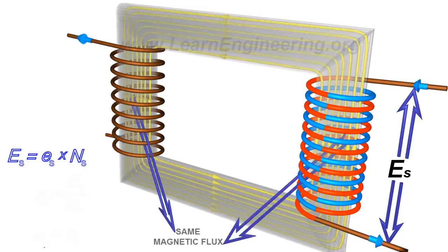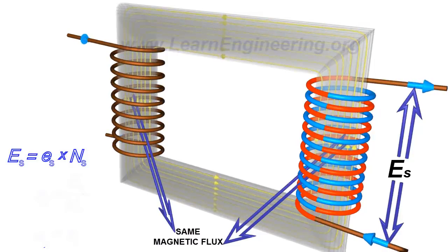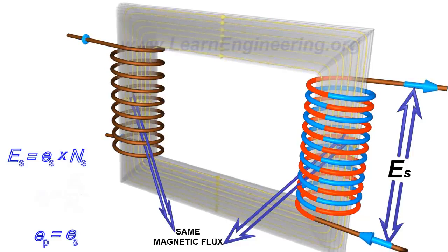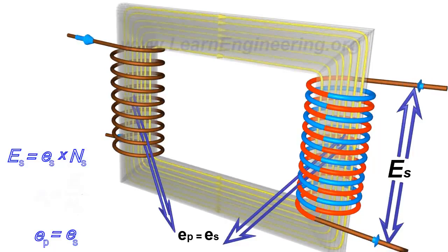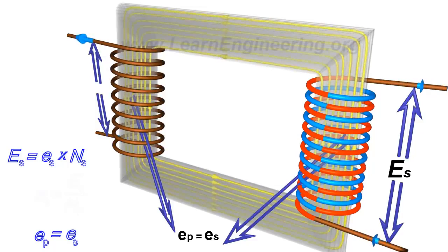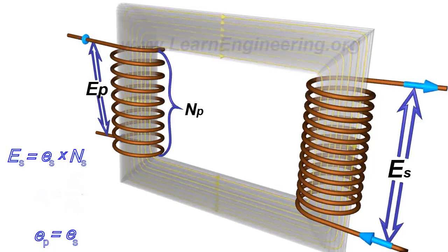Since the same magnetic flux is passing through the primary and secondary coils, the EMF per turn for both the primary and secondary coils will be the same. The EMF per turn for the primary coil is related to the applied input voltage as shown.